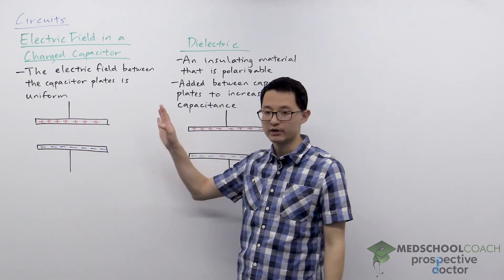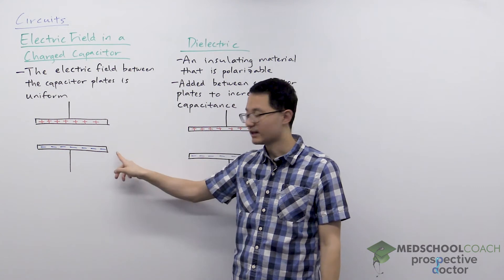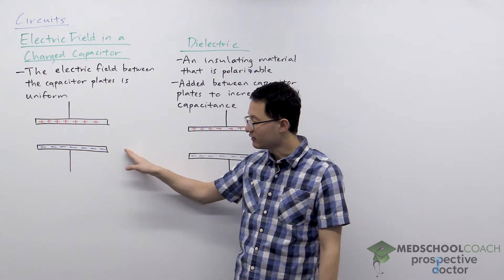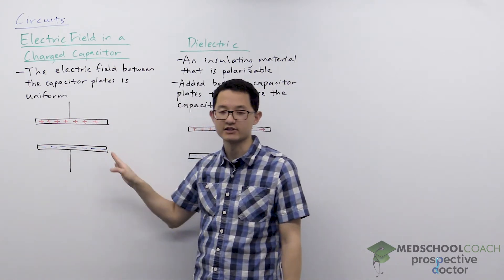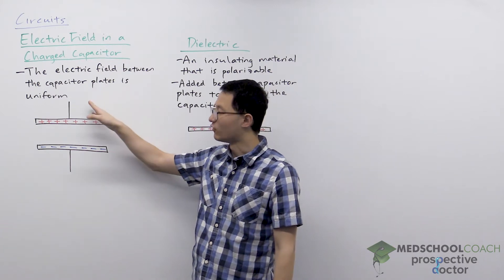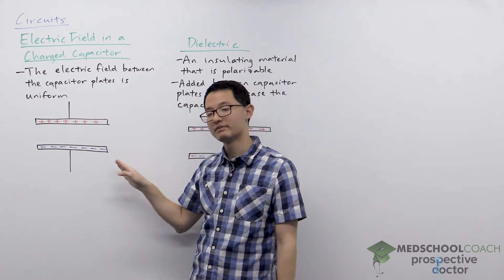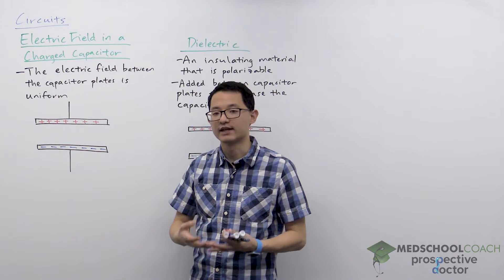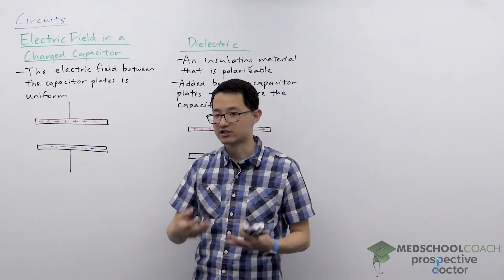When a capacitor is charged, one plate is going to take on positive charge and the other plate is going to take on negative charge. There is an electric field that is produced between these capacitor plates, and this electric field is uniform — the capacitor produces a uniform electric field.